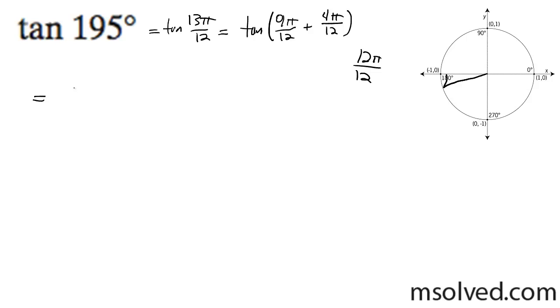So I'm going to come down here. On my top I'm going to have tangent of 9 pi over 12, which reduces down to 3 pi over 4, plus tangent of 4 pi over 12 becomes pi over 3, all over 1 minus tangent of 3 pi over 4 times the tangent of pi over 3.